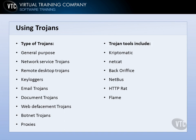Email Trojans can cause random spam emails to be sent, and another purpose might be to propagate themselves through email. Document Trojans are embedded programs in a document — the user opens the document and the Trojan is executed. Web defacement Trojans change HTML and other active code on a website, possibly defacing it by changing the appearance, colors, and fonts. Botnet Trojans are a network of bots that control and attack other systems. Proxy Trojans use a victim's machine to wage attacks, download attack tools, or store illegal content.